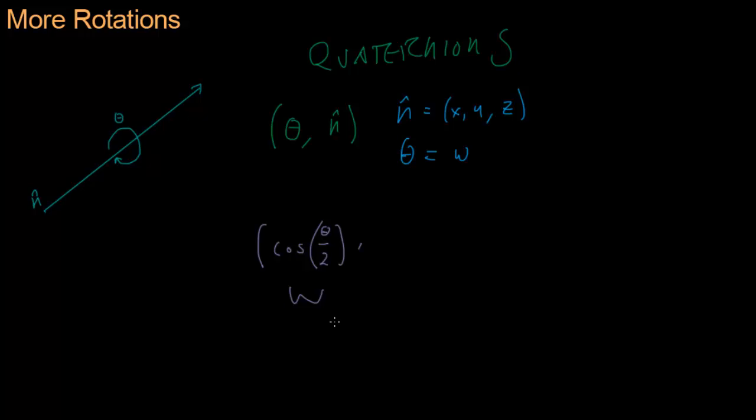They're not really the same thing, because if theta is 0, cosine of 0 is 1, w will be 1. And then as theta increases, w decreases. But again, they are similar. As theta goes up, w goes down. As w goes up, theta goes down.